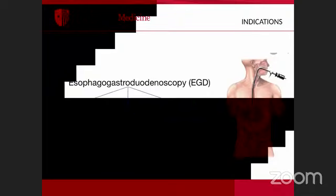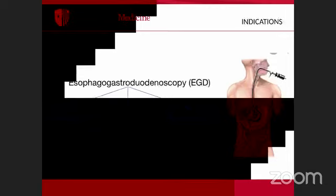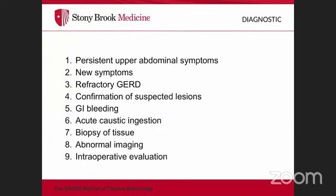Upper endoscopy is used to diagnose problems in the oropharynx, esophagus, stomach, or proximal duodenum. Indications can be diagnostic, screening, surveillance, or therapeutic. Diagnostic indications include persistent upper abdominal symptoms, unexplained weight loss, or symptoms that have not resolved with treatment.